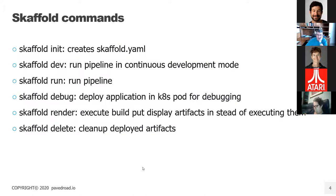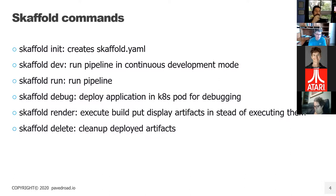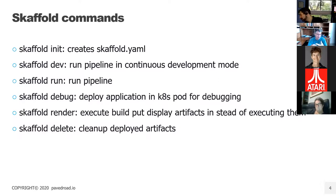The basic Scaffold commands: scaffold init creates a simple scaffold.yaml pipeline definition. scaffold dev executes the pipeline, watches for file changes, and redeploys artifacts continuously. scaffold run does deployment without continuous file watching. There's also a debug command, a render command that displays the output manifest files, and scaffold delete, which removes all deployed artifacts from your Kubernetes cluster — your services, replica controllers, deployments, pods, and other pieces.